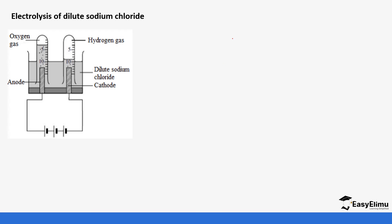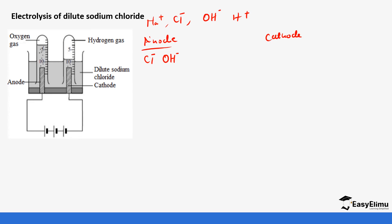Another example is dilute sodium chloride. The ions present in this reaction are: sodium ions, chloride ions, hydroxide ions, and hydrogen ions. At the anode, all the anions are attracted — the chloride ions and hydroxide ions. At the cathode, we have the hydrogen ions and sodium ions.